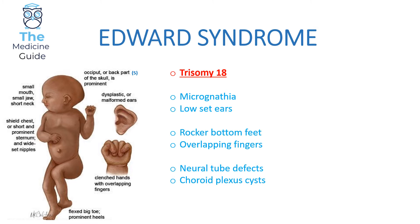Children with Edwards syndrome will present with micrognathia, low set ears, rocker bottom feet, overlapping fingers, neural tube defects, and choroid plexus cysts.